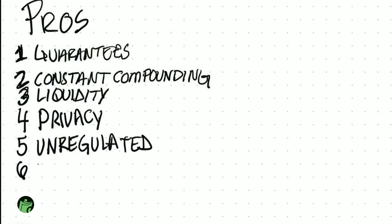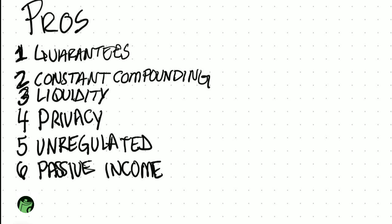Number six: another pro is the passive income aspect. Who doesn't want passive residual income? It just keeps coming. You don't have to check on it — you can log in every once in a while and there's always more money there. You don't have to work harder for it. It could have been set up for you when you were a baby. There will be an increasing pool of liquid passive income, privately and constantly compounding, coming towards you.